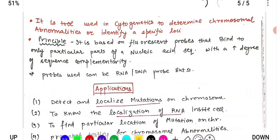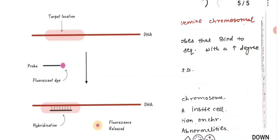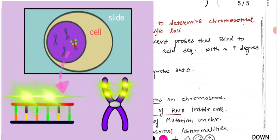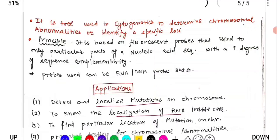The principle of FISH is based on fluorescent probes. Probes are single-stranded DNA or RNA sequences that are complementary to our gene of interest — our target sequence. These probes bind to the target sequence, producing fluorescence, which we detect to locate where the target DNA sequence is within the chromosome.